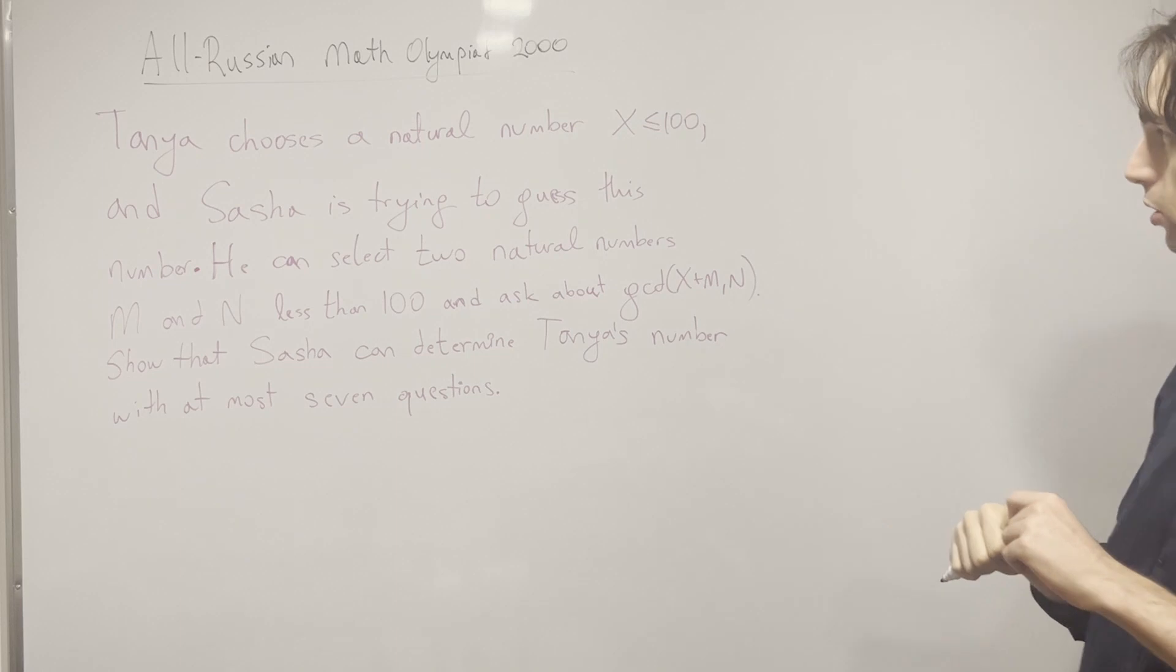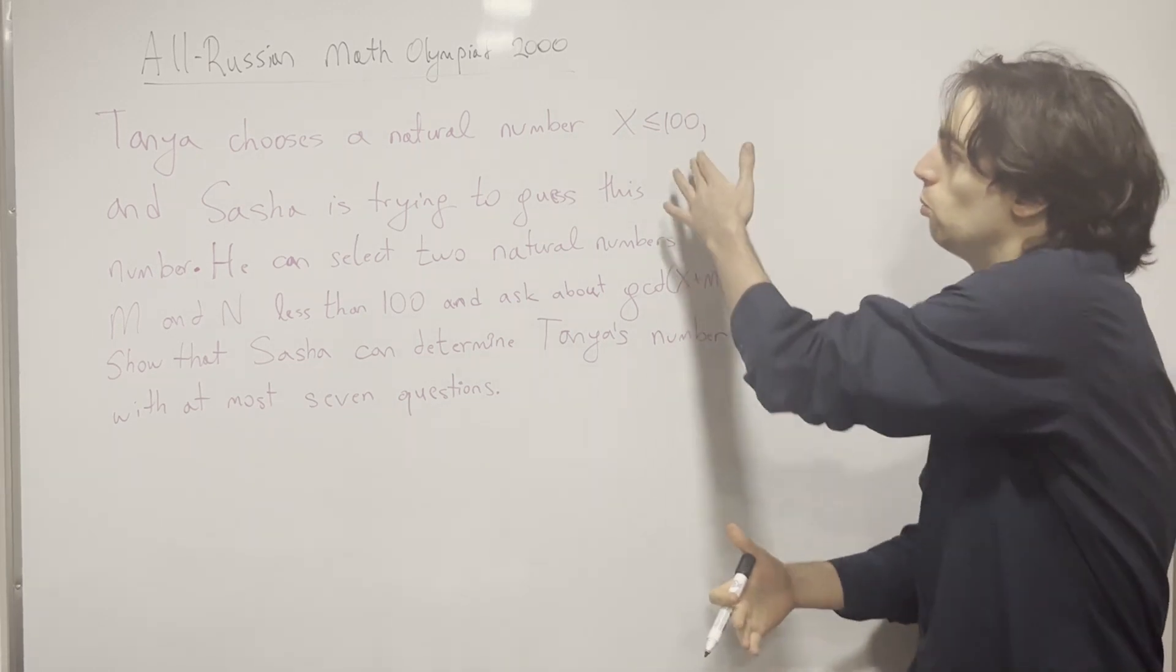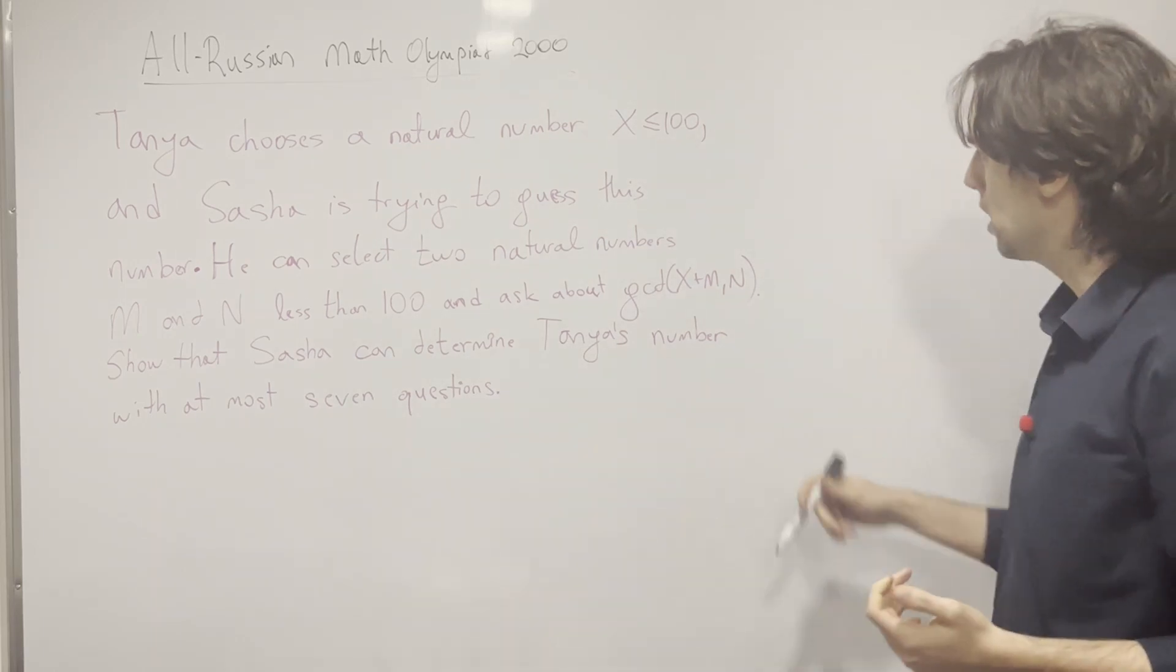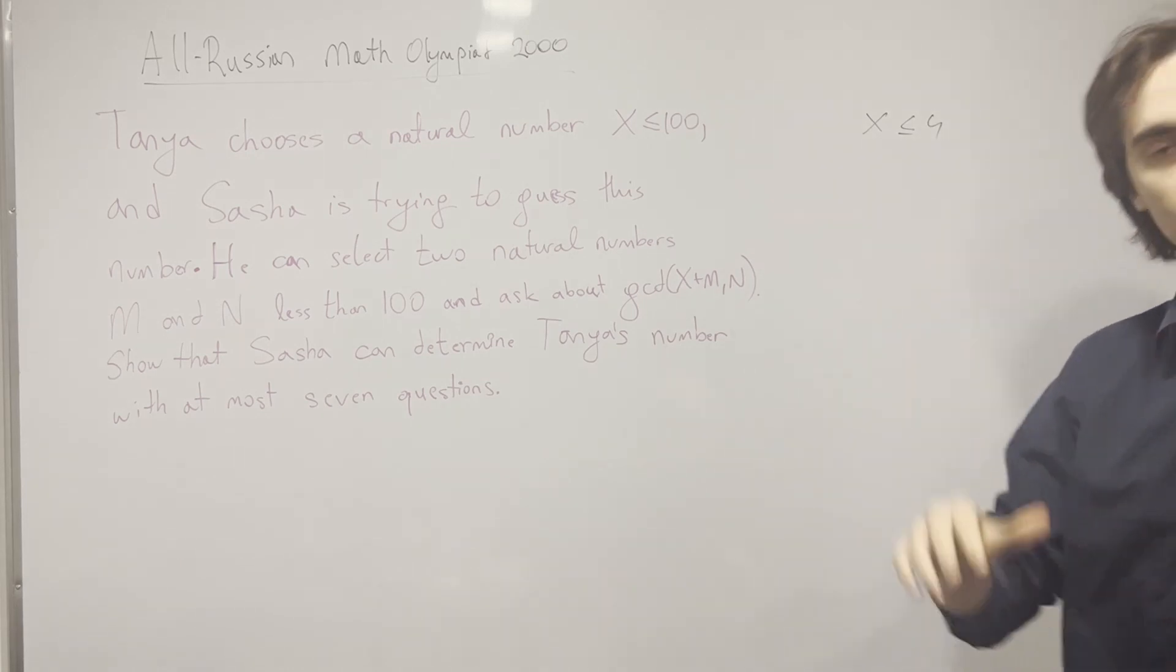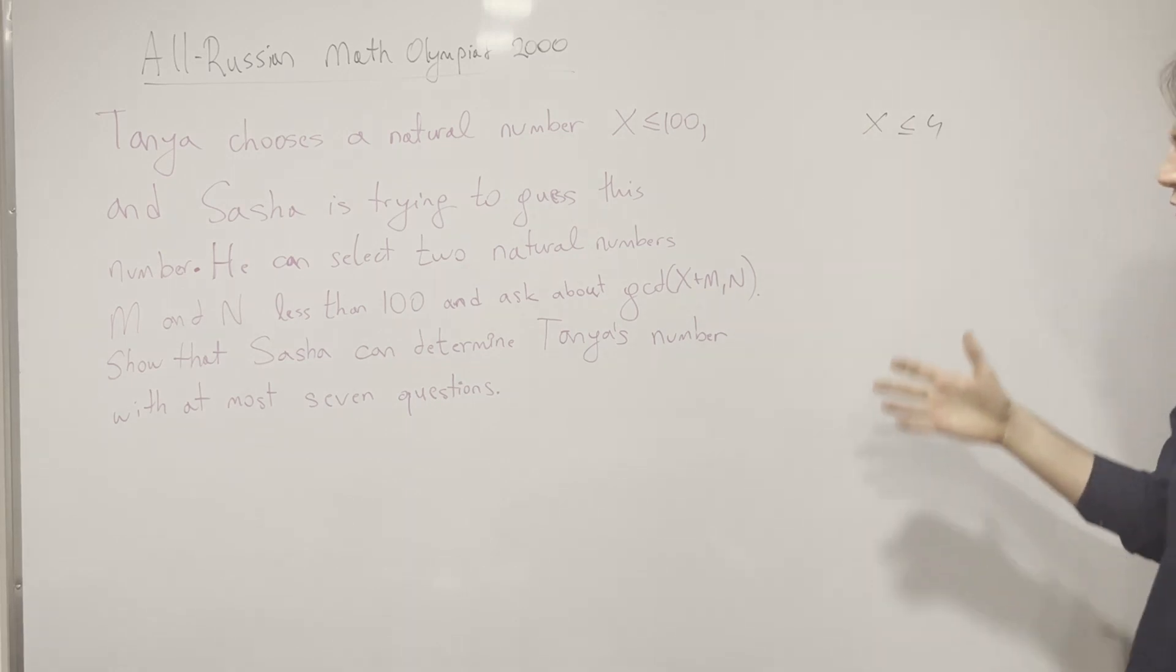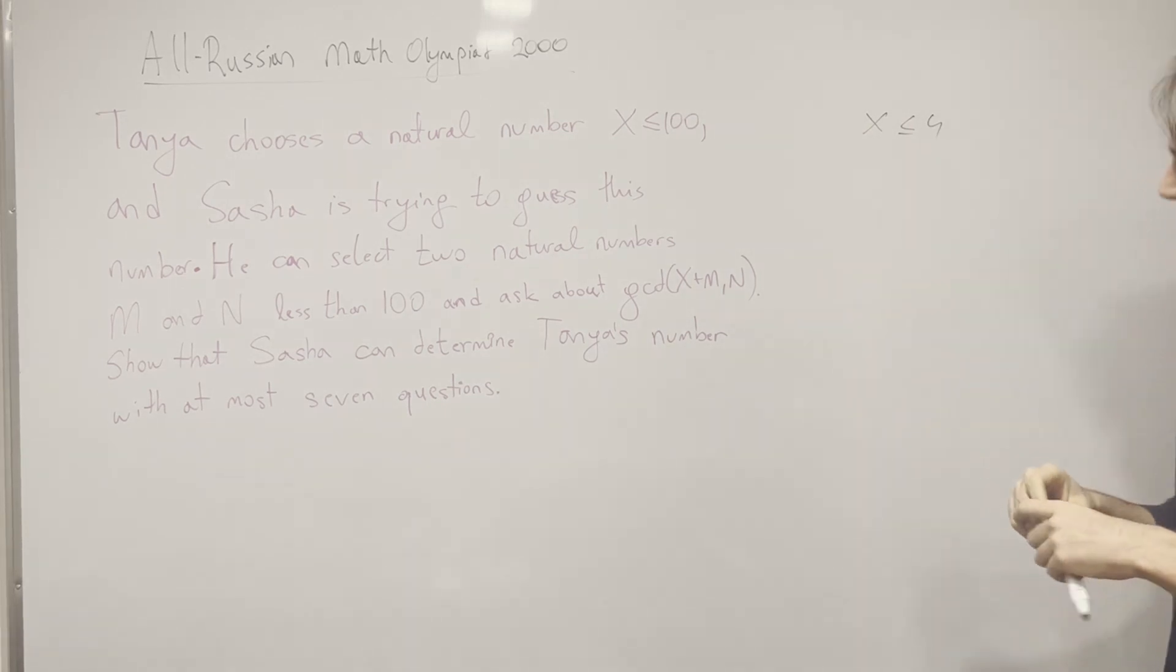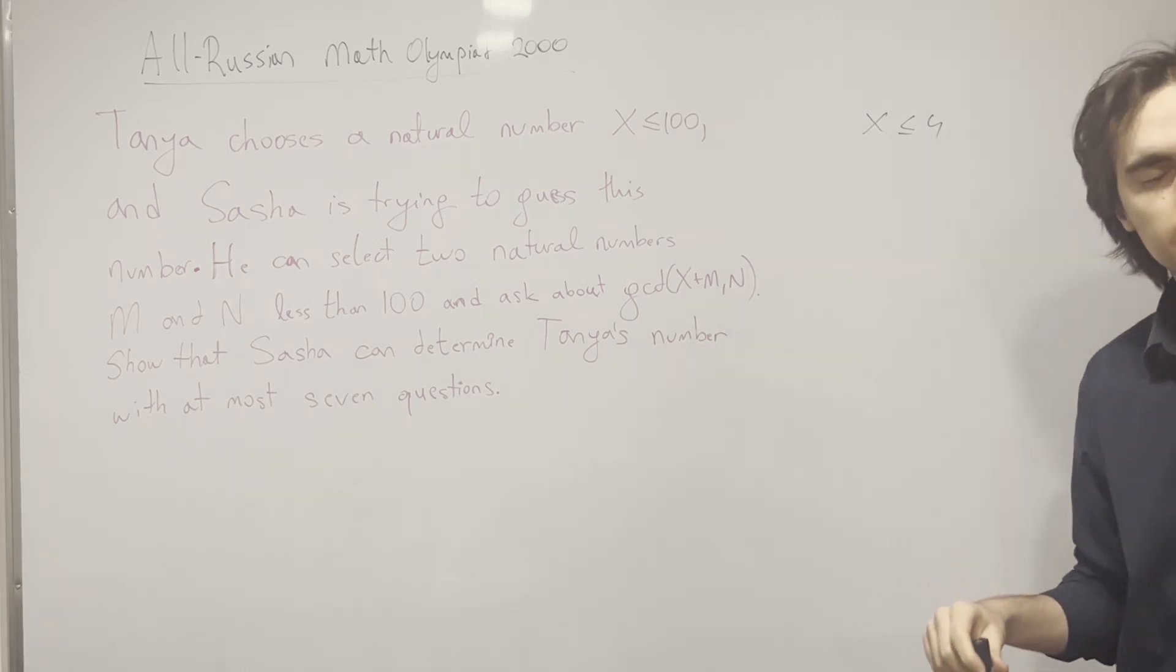Maybe one thing we can do is, if we don't have an idea for what to do, why is this a hundred and why is this seven - let's try to guess numbers for X less than or equal to four. Let's solve an easier problem. I just put it down to four, which may be trivial, but I think it's a good thing to get us used to what the problem is asking. How many questions do I need?